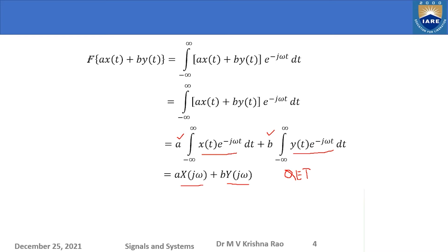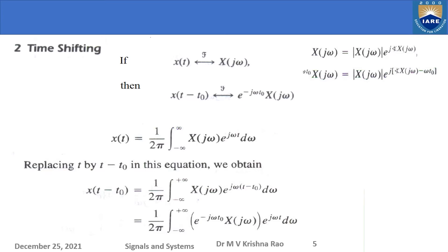Now let us move to the second property: time shifting. These properties are similar to Fourier series properties. I have a signal X of t whose Fourier transform is capital X of omega. If the signal is shifted by T-naught seconds, the Fourier transform is multiplied by a phase term which is proportional to T-naught for a given omega. As omega changes, the shift changes — it is a linear phase with respect to frequency.